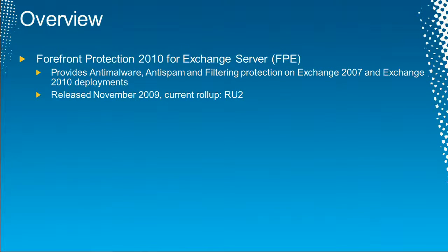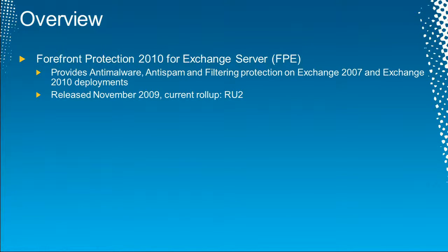First we're going to talk about Forefront Protection 2010 for Exchange Server. This is the anti-malware and anti-spam solution installed on top of Exchange — either Exchange 2007 or Exchange 2010. It provides anti-malware and anti-spam protection for your Exchange Server. It runs on the Edge, it runs on the Hub, and it also has an installation that will run on the Mailbox Server. It was released back in November 2009, and the current update is roll-up number two.